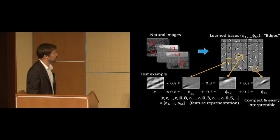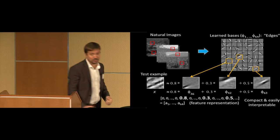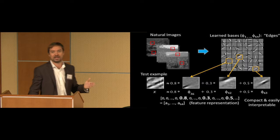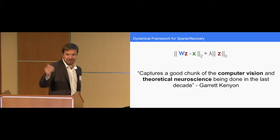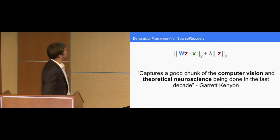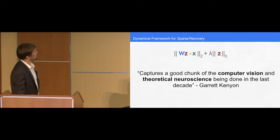And so the brain almost has to be doing something like this. It would just be too inefficient to transmit all that information. If we can get to a sparse representation, where now we only have 64 numbers as opposed to 256. And furthermore, these numbers tell us something about the image. They have semantic information. There's an edge at this orientation in this location. So very inspired by Dr. Kenyon's work, and he says this captures a good chunk of the computer vision and theoretical neuroscience being done in the last decade in this equation here.